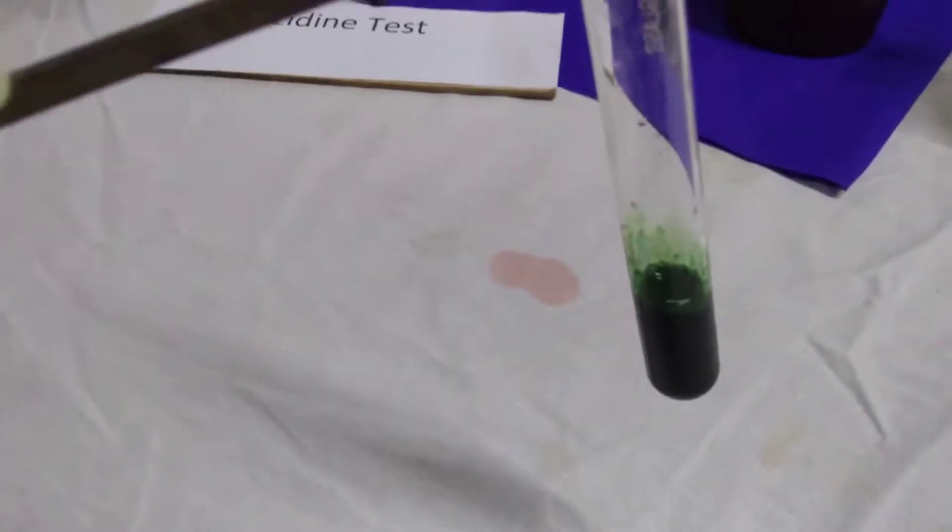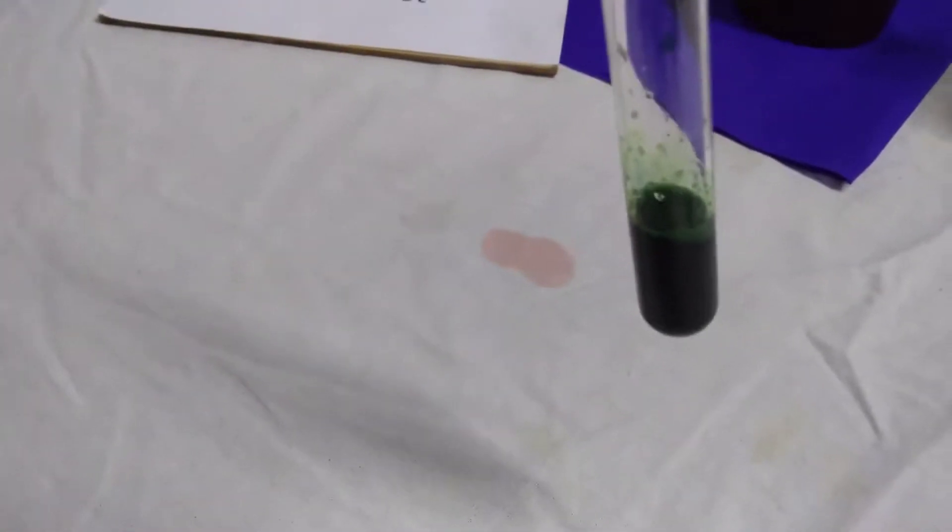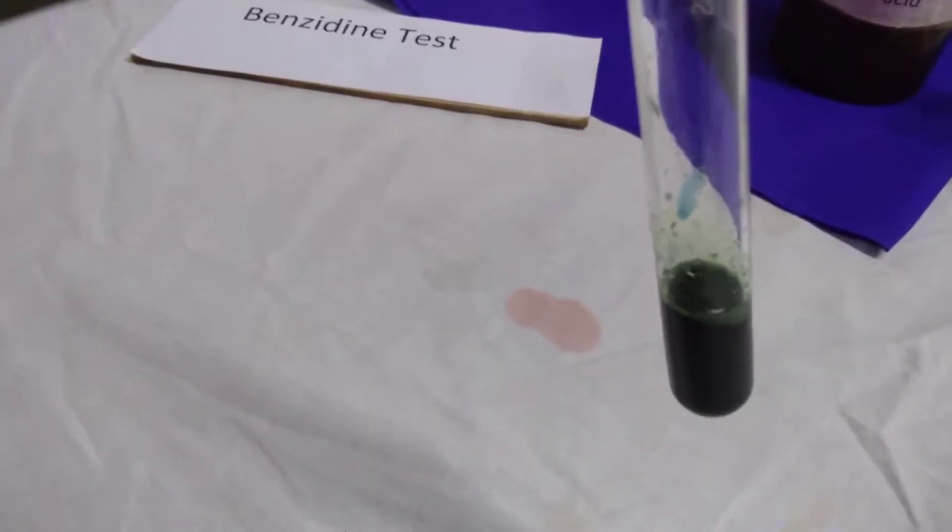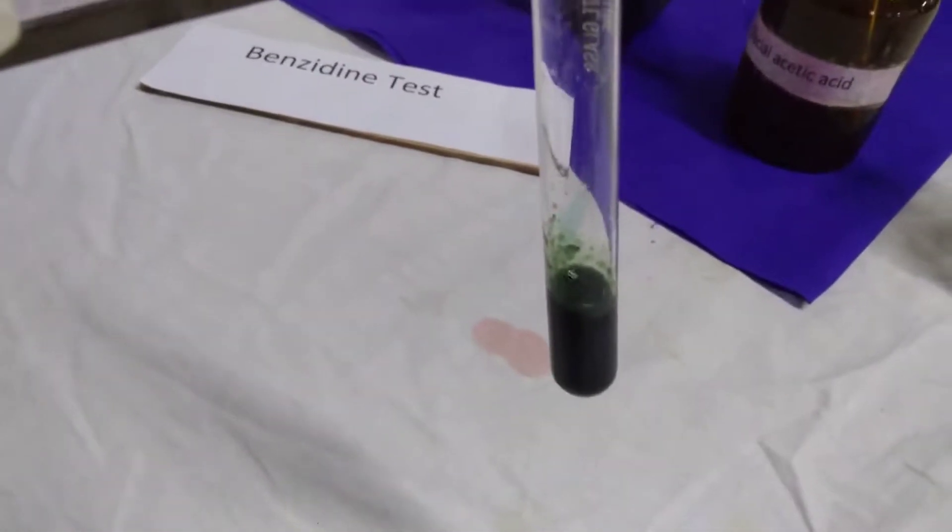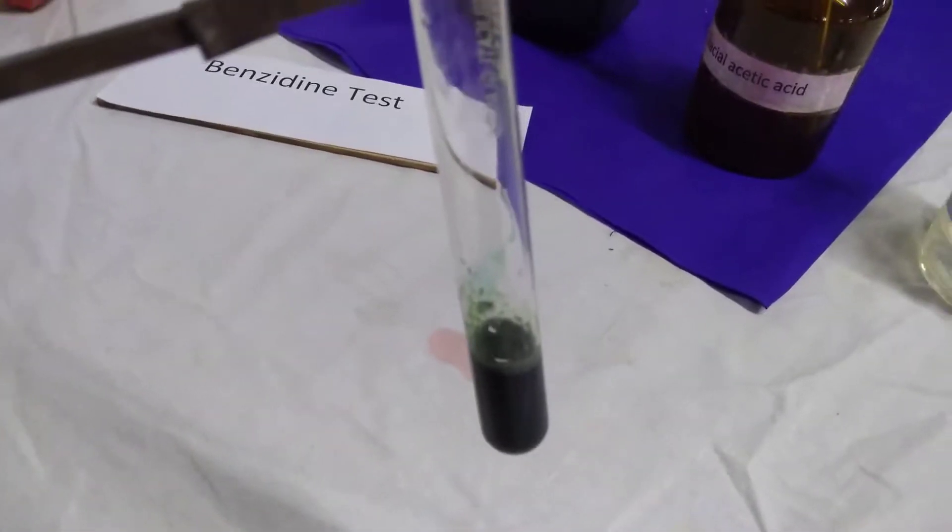The principle behind this test is: peroxidase released from RBCs due to destruction acts on hydrogen peroxide to liberate oxygen, which oxidizes benzidine to a colored compound. After a few minutes, you can see the solution has turned black.